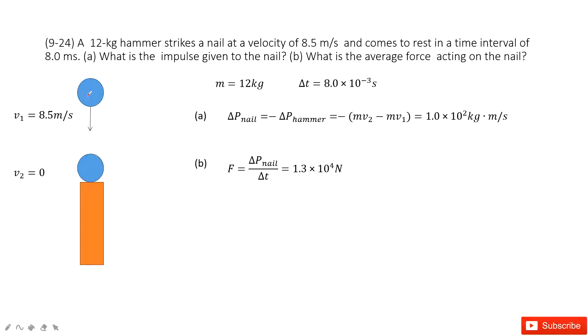As you can see, we have a hammer to hit the nail. The initial velocity for the hammer is given, the final velocity is given, the mass of the hammer is given, and the time-taking delta t is given.